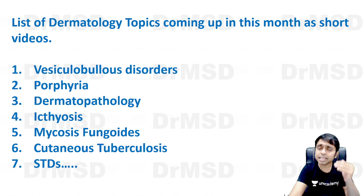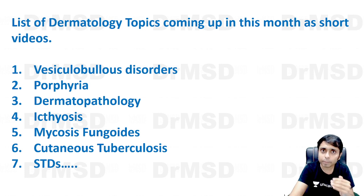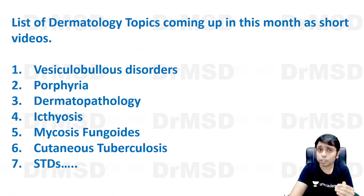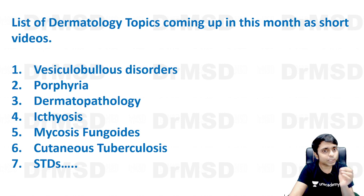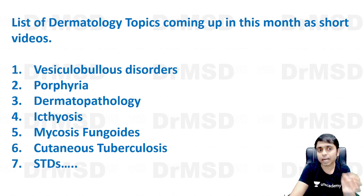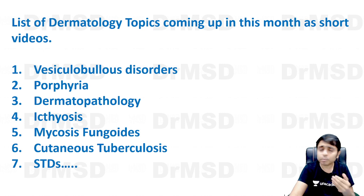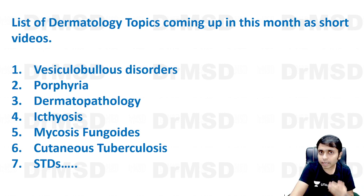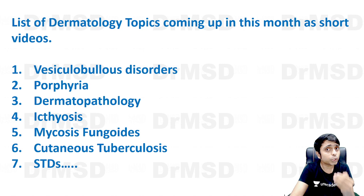These are the list of topics: vesiculobullous disorders, porphyria, dermatopathology, ichthyosis, mycosis fungoides, cutaneous tuberculosis, and sexually transmitted diseases. If you feel any more topics should be added, do comment what topic you want me to make a short video on.